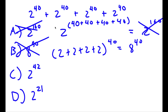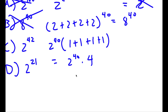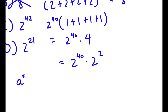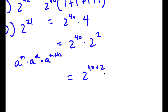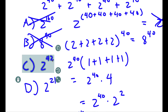For answer choice C, you first factor out 2 to the power of 40: 2 to the power of 40 times (1 + 1 + 1 + 1), because 2 to the power of 40 divided by itself is 1. Simplifying the parentheses: 1 + 1 + 1 + 1 = 4. So I have 2 to the power of 40 times 4. Now 4 is the same as 2 squared, so 2 to the power of 40 times 2 to the power of 2 equals 2 to the power of 42. This is the correct answer.